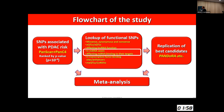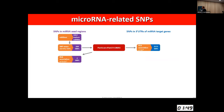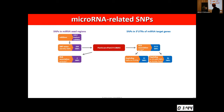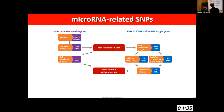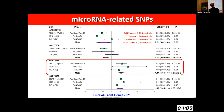Moving quickly to microRNAs. We have a complex selection flowchart. We considered SNPs in microRNA seed regions and also SNPs in 3'-prime UTRs of microRNA target genes. We used PanScan/PanC4 and PanGenEU for selection and ended up with four SNPs for replication in PANDORA. The picture here is less rosy: three of them didn't show anything particularly interesting. Our best candidate — even after the meta-analysis — has a p-value that is not strong enough to claim a new finding.